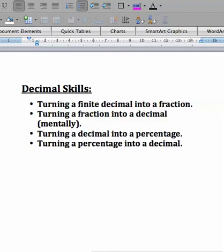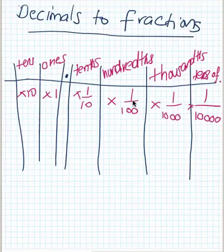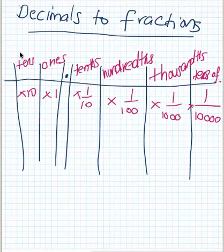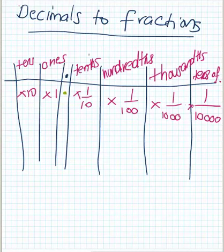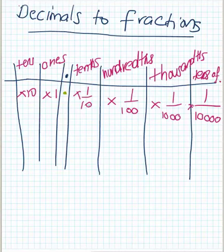Let's quickly recap on our table of values. We know we've got ones, tens, and hundreds going up that way. After our decimal point, we have tenths, hundredths, thousandths, and ten-thousandths, and it never ends. Another way of showing tenths is to multiply by one over ten, because tenths means out of ten — it's a fraction. Hundredths is out of a hundred, thousandths out of a thousand. With each column after the decimal point, we simply add on a zero.